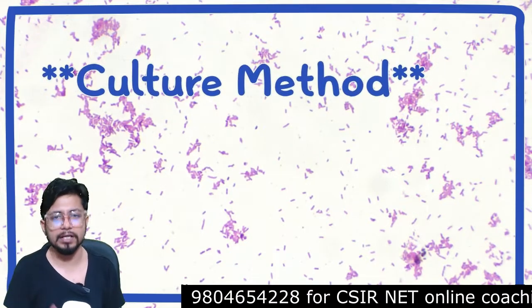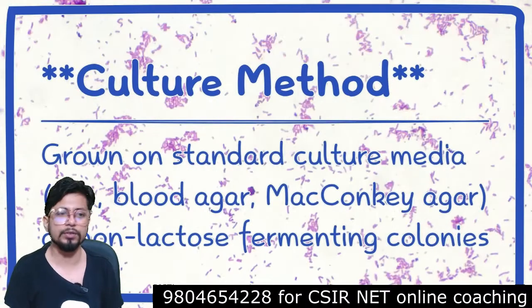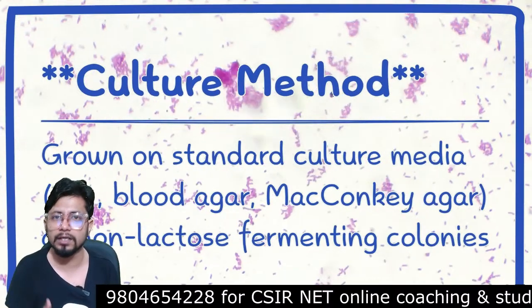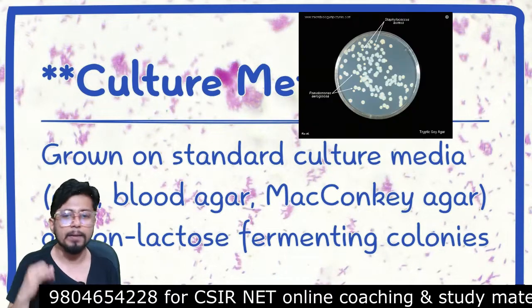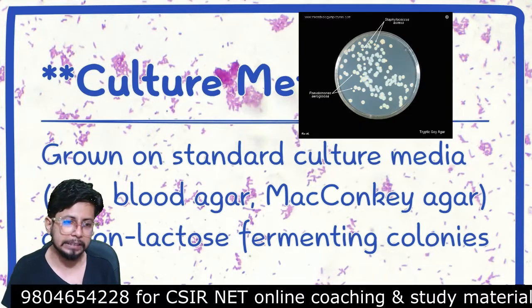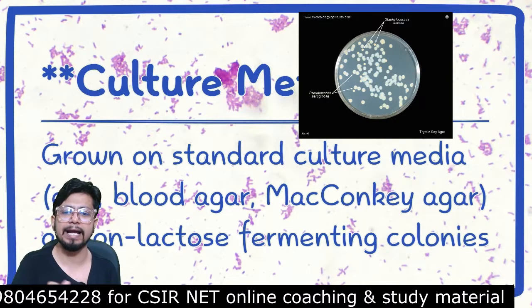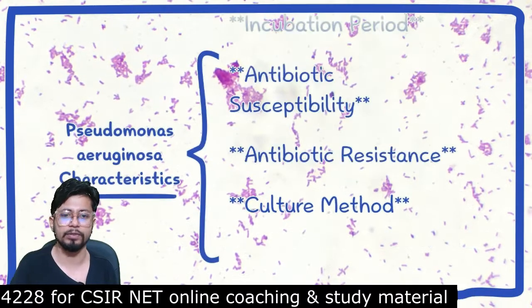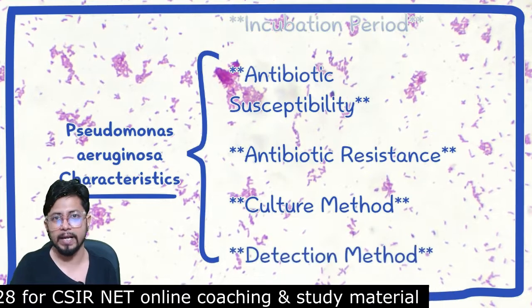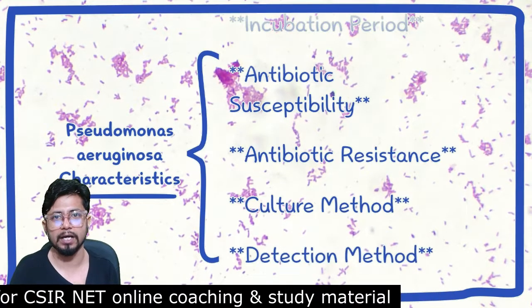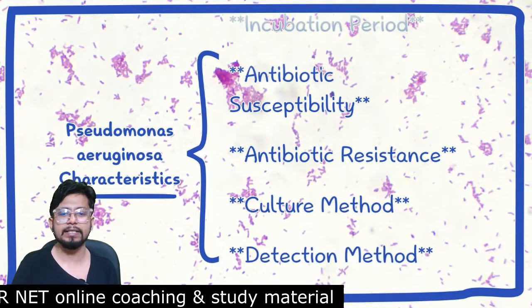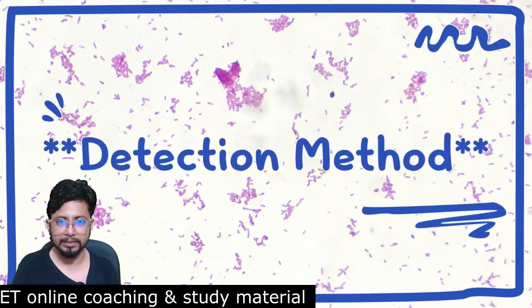For culture methods, Pseudomonas aeruginosa can be grown on standard culture media such as blood agar and MacConkey agar. Non-lactose-fermenting colonies can be found on both blood agar and MacConkey agar.